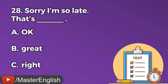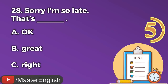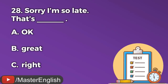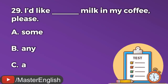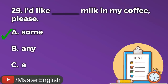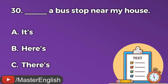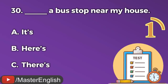Question number twenty-seven. Do you sell stamps? Yes, we do. How ___ do you want? A: Any. B: Many. C: Much. The correct answer is B: Many. How many do you want? Question number twenty-eight. Sorry I'm so late. That's ___. A: Okay. B: Great. C: Right. The correct answer is A: Okay. That's okay. Question number twenty-nine. I'd like ___ milk in my coffee please. A: Some. B: Any. C: A. The correct answer is A: Some. I'd like some milk in my coffee please. Question number thirty. ___ a bus stop near my house. A: It's. B: Here's. C: There's. The correct answer is C: There's. There's a bus stop near my house.